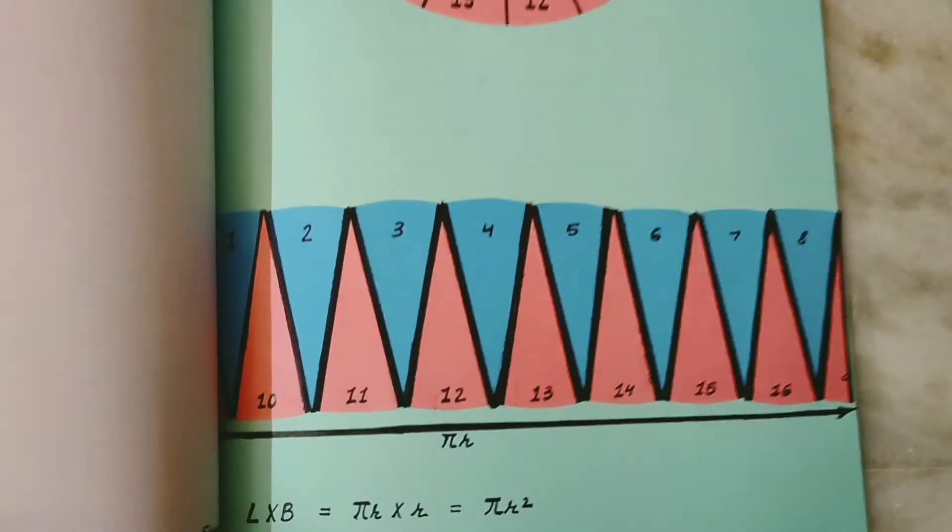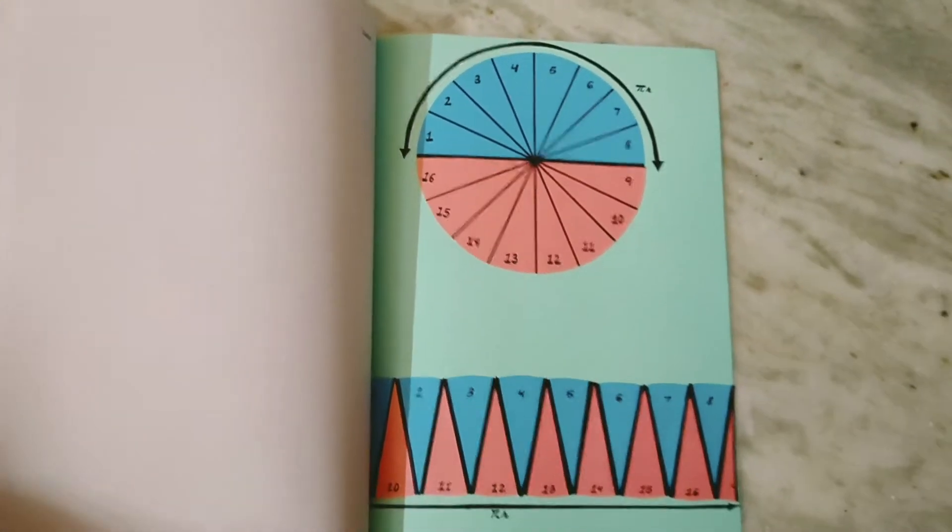Area of the rectangular shape so formed with the 17th sector is same as the area of the circle.